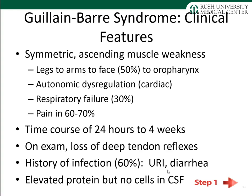Guillain-Barré causes symmetric ascending muscle weakness: legs affected first, then arms, then face. Approximately 50% of patients will have facial paresis, and finally the oropharynx is affected. Autonomic dysregulation is common, including cardiac involvement. Respiratory failure occurs in 30% of patients, and pain in 60–70%. Onset of neurological symptoms can occur over 24 hours to 4 weeks. Key examination finding is loss of deep tendon reflexes. Approximately 60% present with a prior infection history — typically upper respiratory tract infection, less commonly diarrhea or pneumonia.